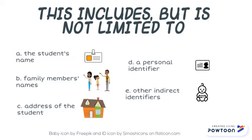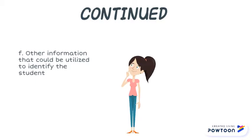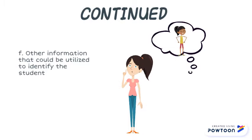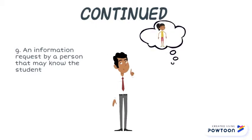Other identifiers such as student's date of birth, place of birth, and mother's maiden name. Other information that alone or in combination is linked or linkable to a specific student that would allow a reasonable person in the school community who does not have personal knowledge of the relevant circumstances to identify the student with reasonable certainty, or information requested by a person who the educational agency or institution reasonably believes knows the identity of the student to whom the educational record relates.